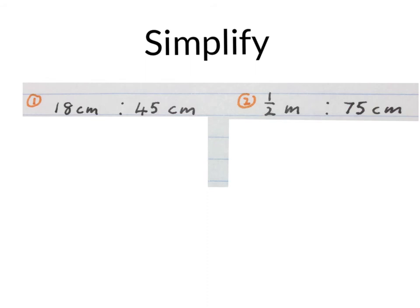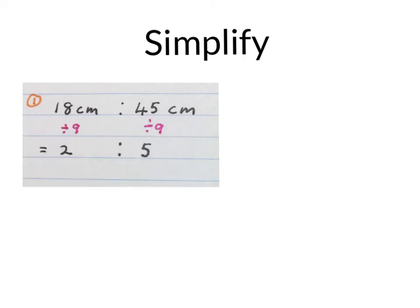Let us simplify the following two sets of ratios. 18 cm to 45 cm. They have a highest common factor of 9 so we divide 9 into both of them. Simplified version 2 to 5.